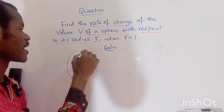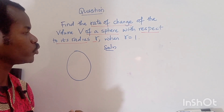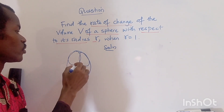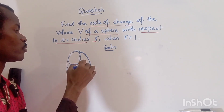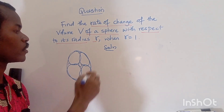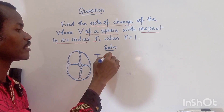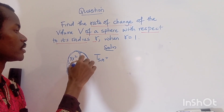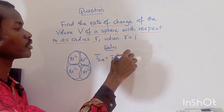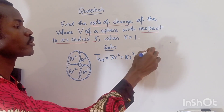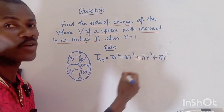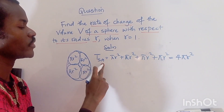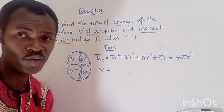A sphere looks like an egg or oval shape. To make up a sphere you need four circles. So the total surface area equals four times πr², because each circle is πr², giving us four πr² as the total surface area.